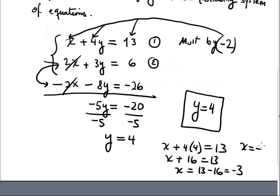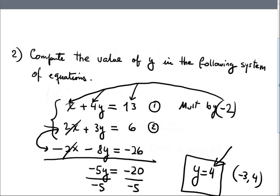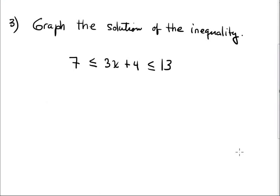Now x equals negative 3, and the ordered pair solution is negative 3, 4. But in the test they want only the y value. Look here, find the value of y.